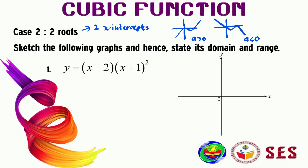Let us consider the first question: we need to sketch the graph of (x − 2)(x + 1)². When we analyze this, we have (x − 2) to the power of one, which is the linear function, and (x + 1)² is the quadratic function.